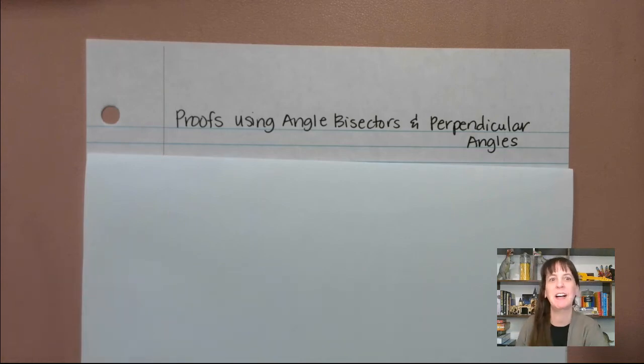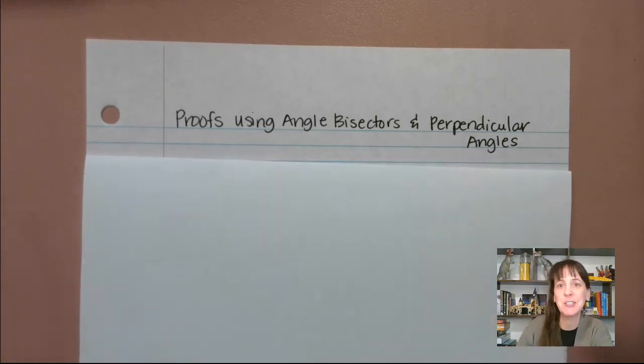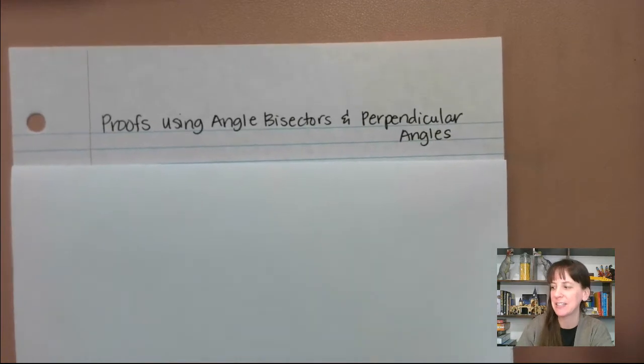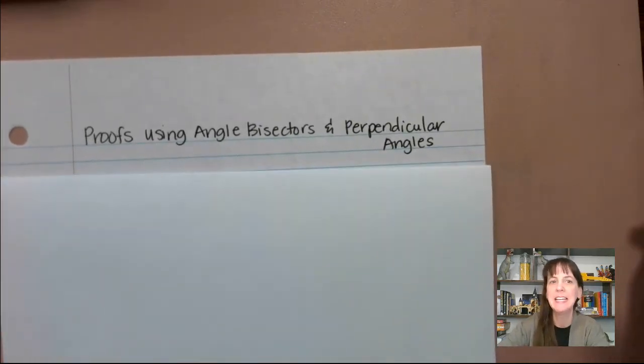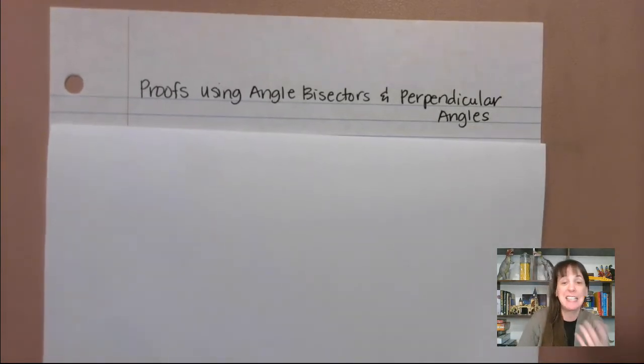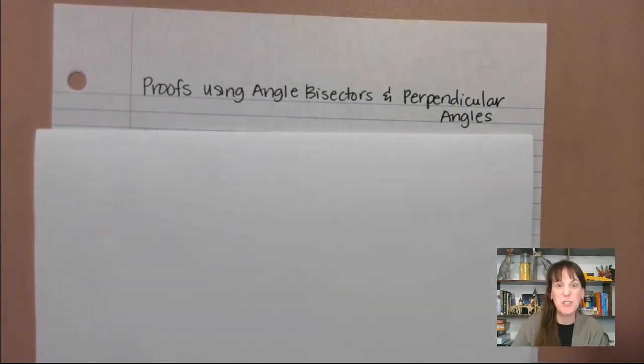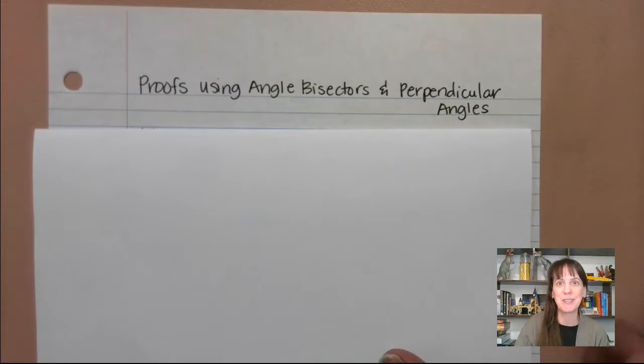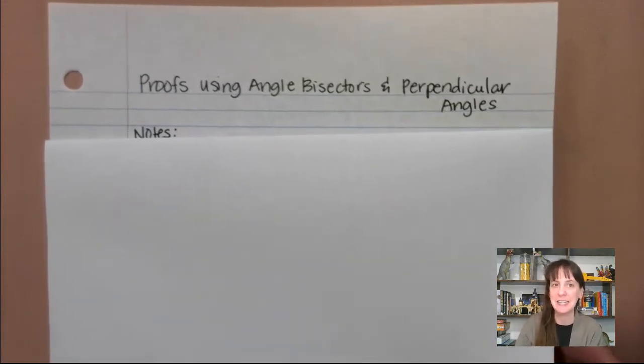Hi friends, welcome back. Today we're talking about proofs using angle bisectors and perpendicular angles. I love this because when you're given some of these words in your proof, when it's a given, all you have to do is use the definition. So it's usually a nice little hint to help you out.